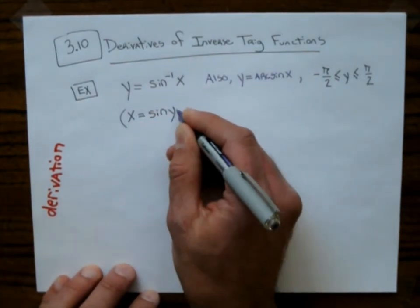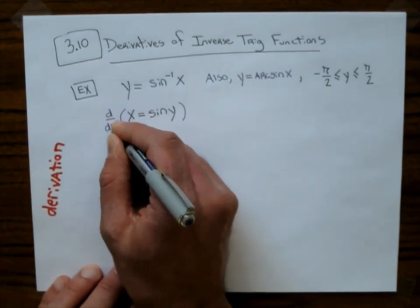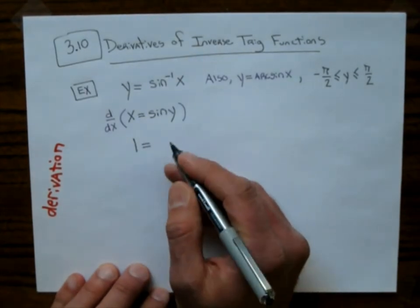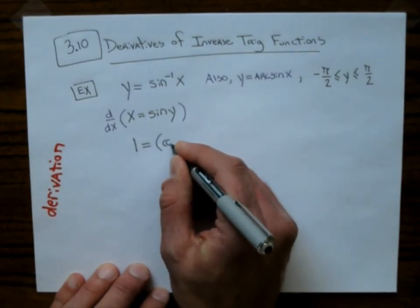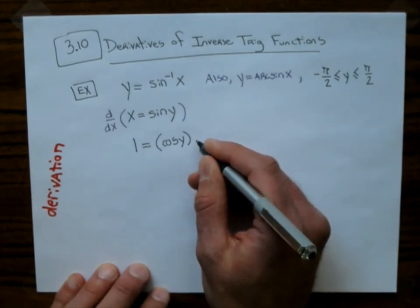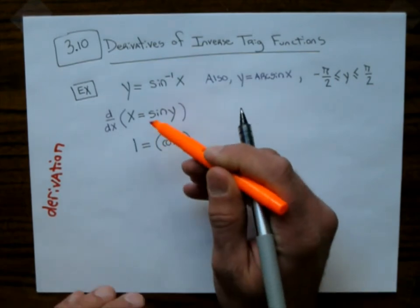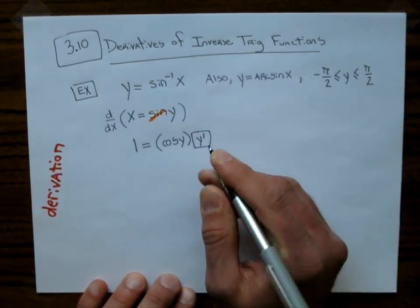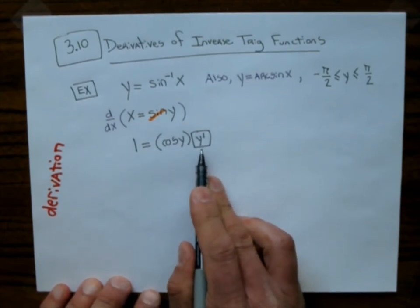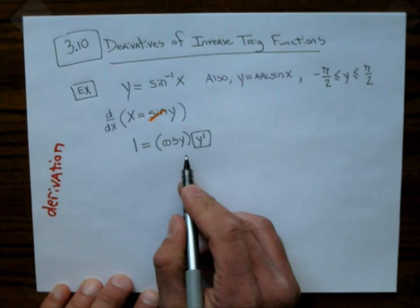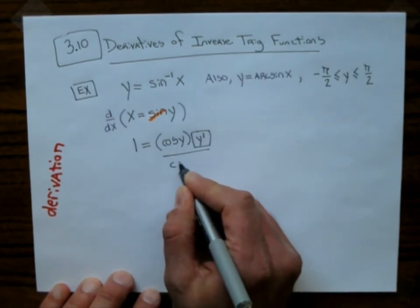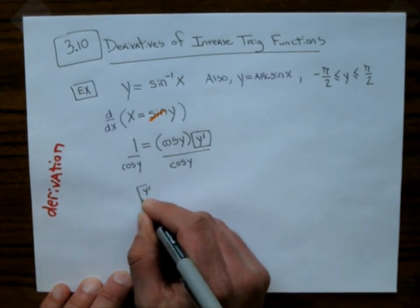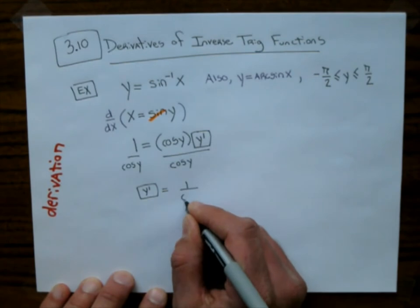Next I'm going to hit both sides of this equation with the derivative. The derivative of x with respect to x is 1. The derivative of sine y — the derivative of sine something is cosine something — and the derivative of y, so we're doing the chain rule. The derivative of y is y prime. We can solve for y prime now by dividing both sides by cosine y, so y prime equals 1 over cosine y.